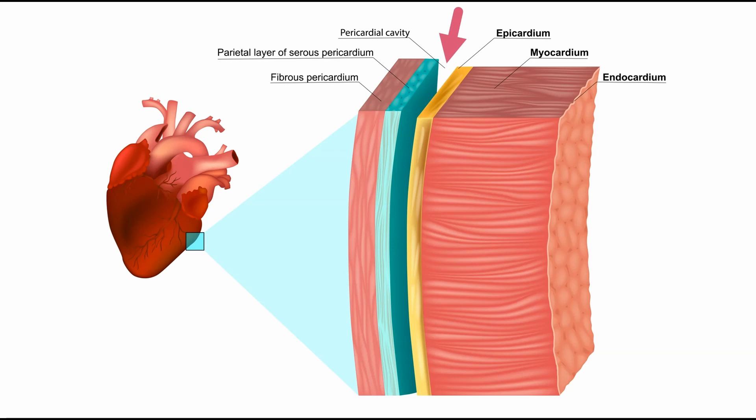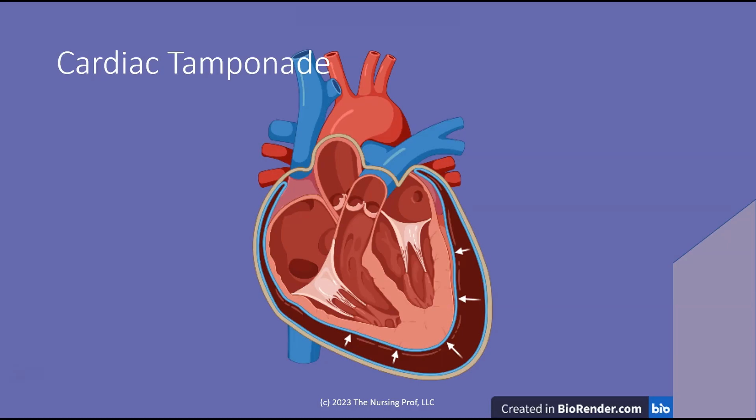However, if we get some fluid forming in that pericardial cavity, it can cause problems. That's what we call a cardiac tamponade. You can see that fluid has formed in that pericardial space and is now pressing on and compressing the ventricle. The ventricle is now smaller than it should be, and that is going to cause a decrease in cardiac output.